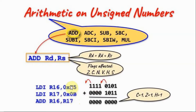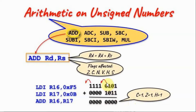As an example, we want to add these two numbers in R16 and R17. Here is the addition in binary — the result is zero, so the zero flag is set. Note that we have a carry out from the binary coded decimal addition and a carry out from the most significant digit, so the carry flag is set and the half carry flag is set.